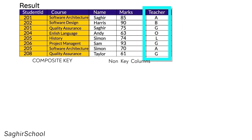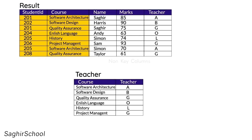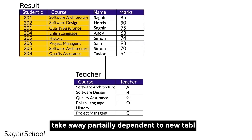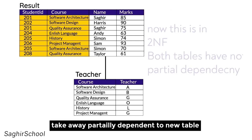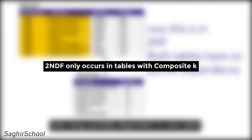When there is partial dependency, we need to break that column into another table. Marks and Name are fully dependent on both keys, so they stay. The Teacher column is taken from the main table and combined with the Course column into a separate table. Now both tables have no partial dependency, so the table is in Second Normal Form.